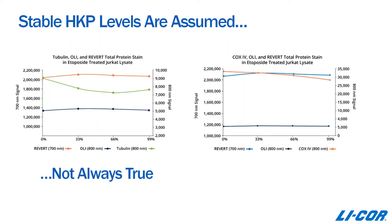What you can see here is that tubulin shows a pretty dramatic decrease in expression level as the amount of treatment increases. COX-4 is affected to some degree, although certainly to a much lesser extent than tubulin. The Revert total protein line is very stable and constant, and the Odyssey Loading Indicator line is a nice straight line too, which means you didn't have any gross pipetting errors that would account for the changes you're seeing. Based on this combined data, you can really conclude that the housekeeping proteins are being affected by the treatment conditions, and in this case neither one would probably be a good candidate for normalizing your data.